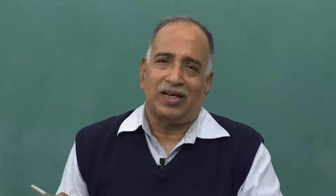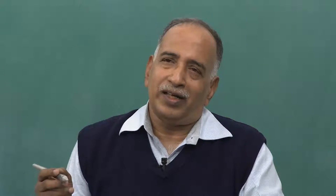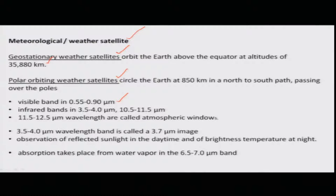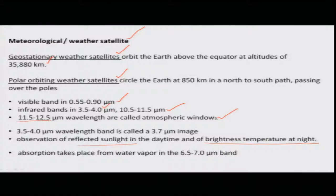These satellites can record cloud patterns in different bands. One is the visible band at 0.55 to 0.9 micrometers. There are two infrared bands, one at 3.5 and another at 4 micrometers. The third is 10.5 to 12.5 micrometers, called the atmospheric window, where observations are reflected sunlight in the daytime and brightness at nighttime.